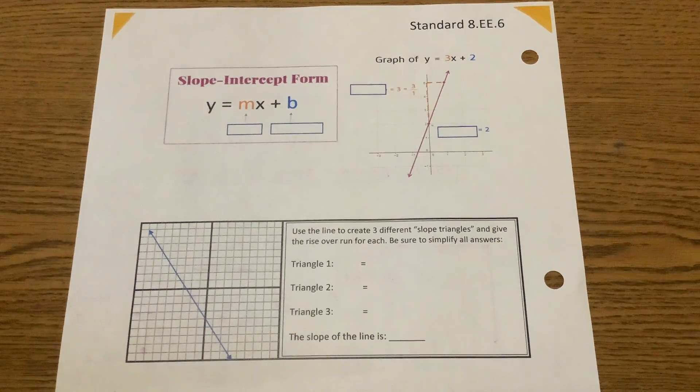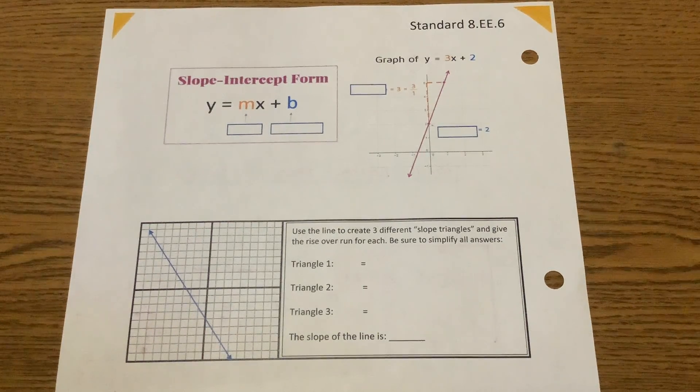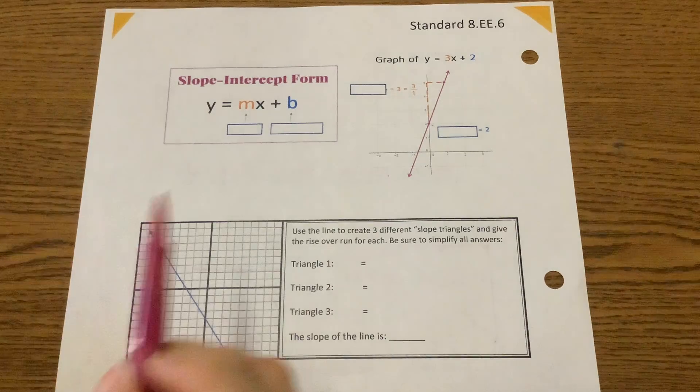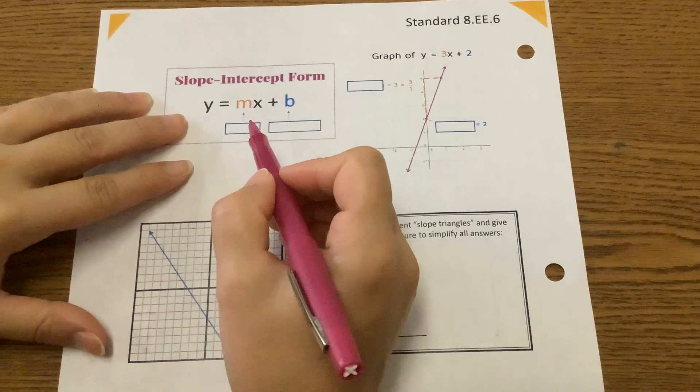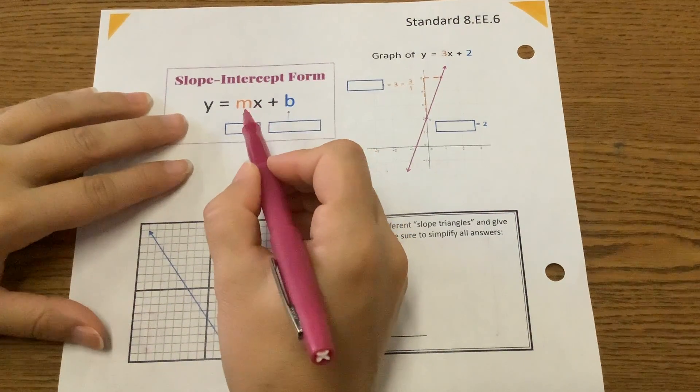All right, on the back of your notes, it discusses what slope-intercept form is. Okay, so slope is always with the x value, so what does m represent?